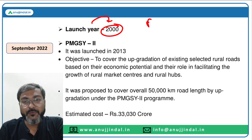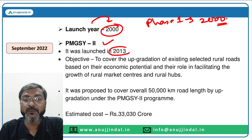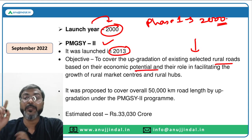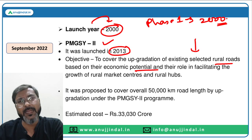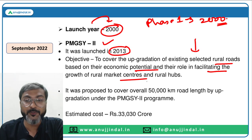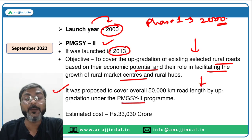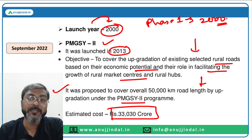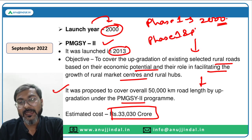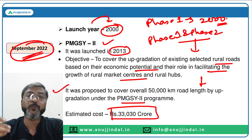PMGSY Phase 1 was launched in the year 2000. Phase 2 was launched in 2013 with a slightly different objective of upgradation of existing selected rural roads based on their economic potential and their role in facilitating the growth of rural market centers. It proposed to cover 50,000 km of road length with a total cost of ₹33,030 crores. Both Phase 1 and Phase 2 have recently been extended up to September 2022.